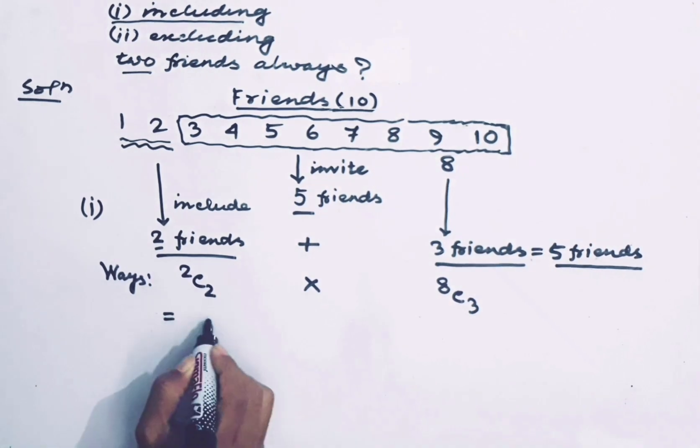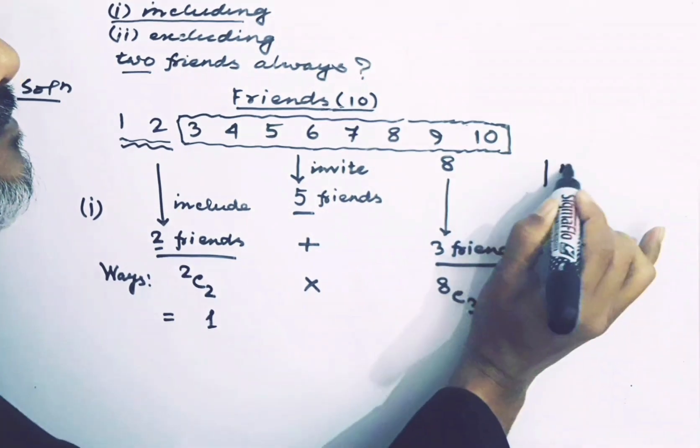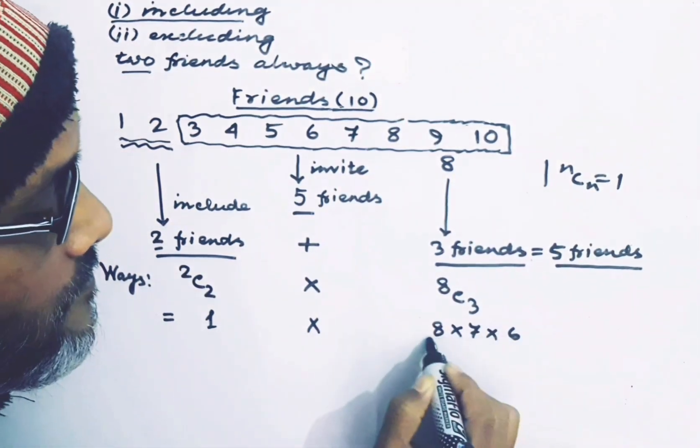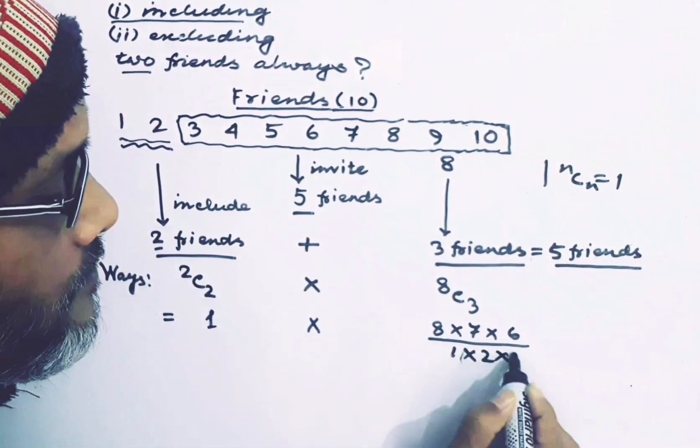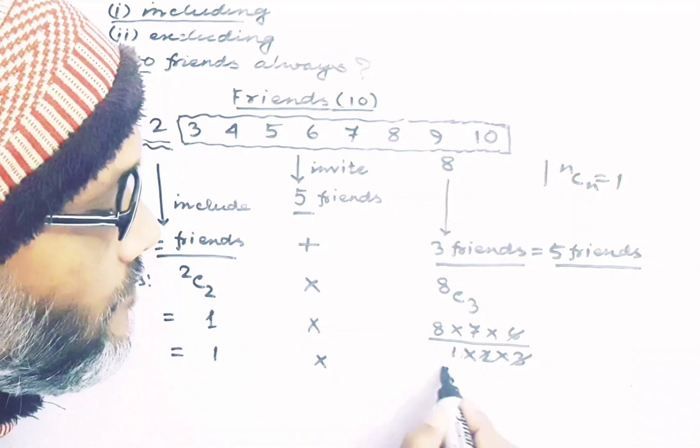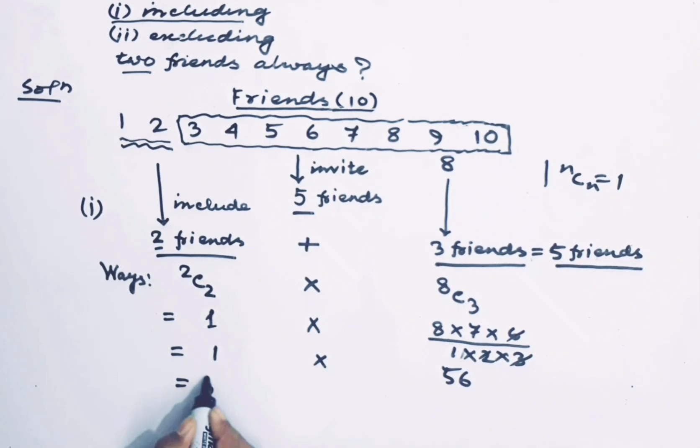Here 2C2 equals 1 because we know nCn equals 1. Here 8C3 equals 8 times 7 times 6 divided by 1 times 2 times 3, which equals 56. Therefore, 1 times 56 equals 56. Finally, the answer is 56.